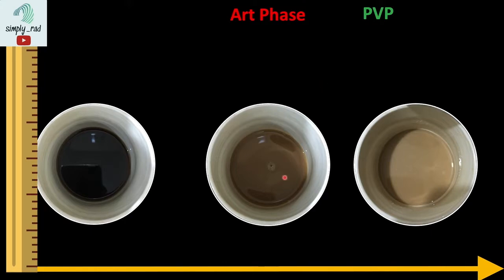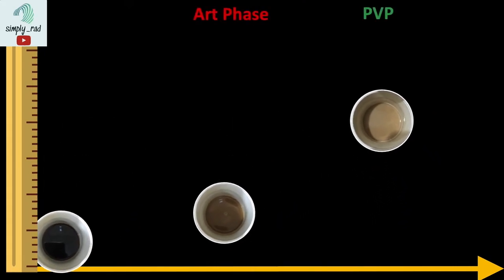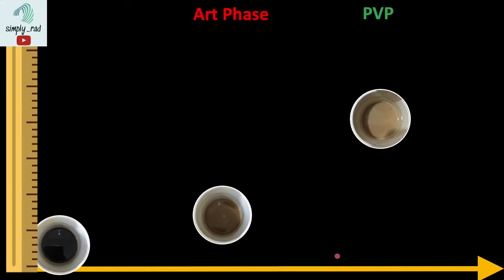If we arrange the degree of hepatic enhancement in these phases, we will see something like this. Of course, the peak enhancement occurs during the portal venous phase.